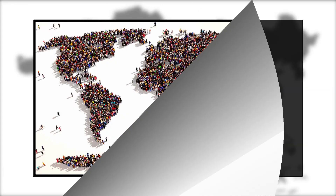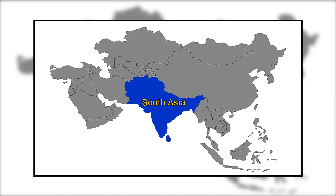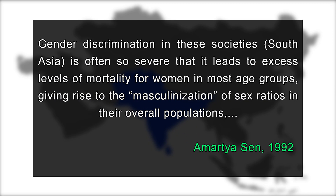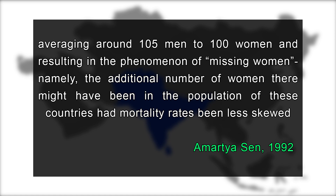On average, in developed countries, there is roughly an equal proportion of men and women in the population as a whole. But strangely, this is not the case in many parts of the developing world, especially in South Asia. Gender discrimination in these societies is often so severe that it leads to excess levels of mortality for women in most age groups, giving rise to the masculinization of sex ratios in their overall populations, averaging around 105 men to 100 women.